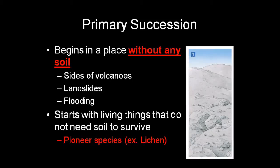Primary succession takes place in an area where there is no soil. That can be after a volcanic eruption, a landslide, or a flood. The first species to take over the new area has to be able to survive without soil. A pioneer species, which is the first to take over an area, that's common in primary succession is lichen.